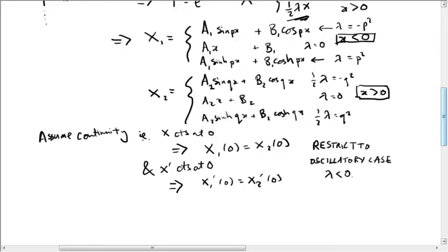So if I do that, then what do I have? Well, X1 at zero equals a1 sine p times 0, which is zero, plus b1 times cos p of zero, which is one, so it equals b1. And X2 at zero similarly equals b2. So the continuity condition implies that b1 equals b2, so that gives b2 in terms of b1. Excellent.